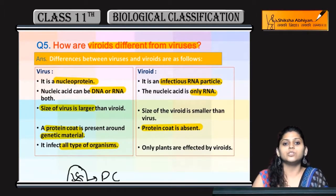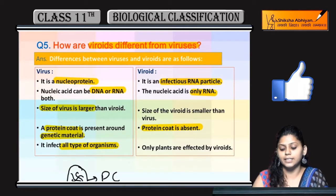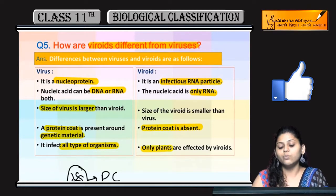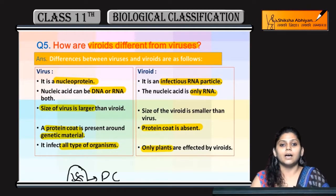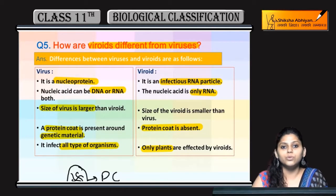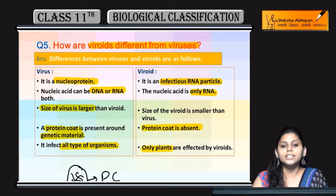Viruses are known to infect all types of organisms — whether plants or animals. Whereas viroids only affect plants.